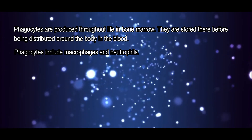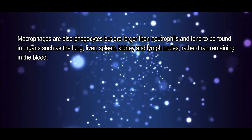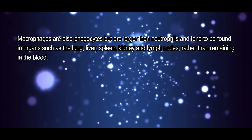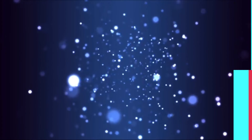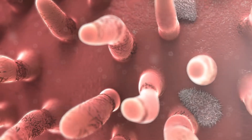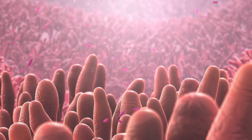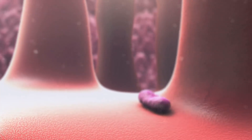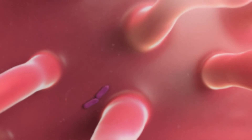Phagocytes include macrophages and neutrophils. Macrophages are larger than neutrophils and tend to be found in organs such as the lung, liver, spleen, kidney, and lymph ducts rather than remaining in the blood. After being made in the bone marrow, macrophages travel in the blood as monocytes, which develop into macrophages once they leave the blood and settle in the organs, removing any foreign matter found there. Macrophages are long-lived cells and play a crucial role in initiating immune responses.